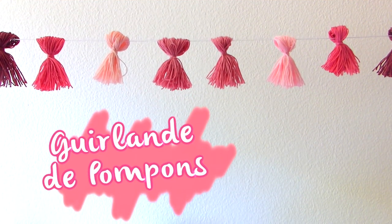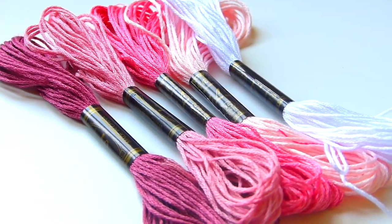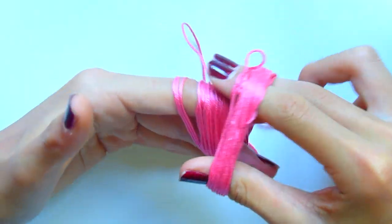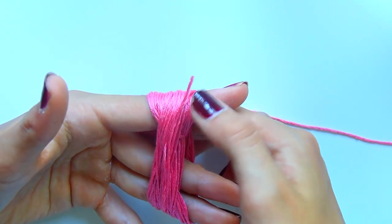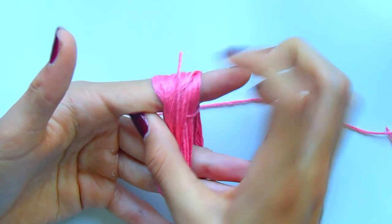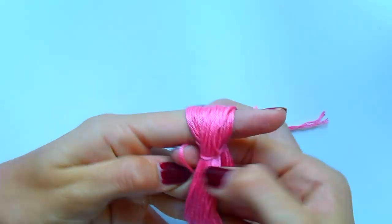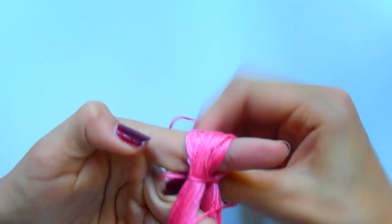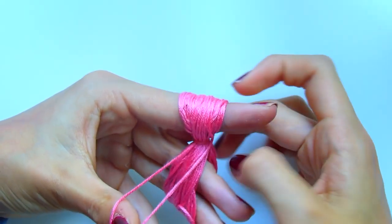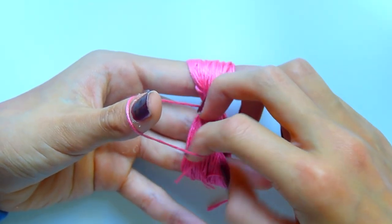Le prochain DIY est pour réaliser une guirlande de pompons. Je trouvais ça vraiment super sympa pour Noël ou même pour l'hiver en général, ça fait très cocooning. On va prendre des échevettes de coton de la couleur de notre choix et l'enrouler deux fois autour de nos trois doigts. Ça peut être plus ou moins de doigts selon la longueur souhaitée. Je vais laisser dépasser un peu de fil et avec le fil qui dépasse, enrouler le haut du pompon puis fixer le tout en faisant des nœuds.